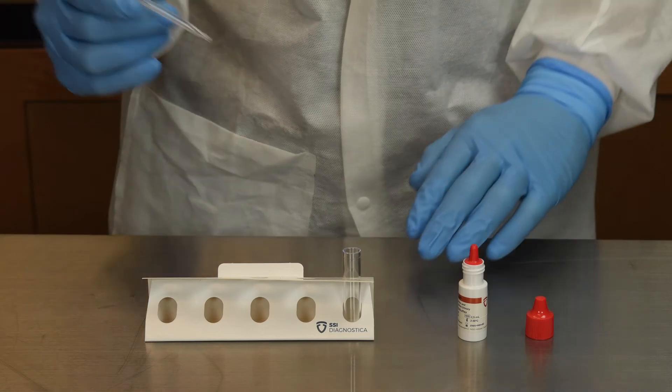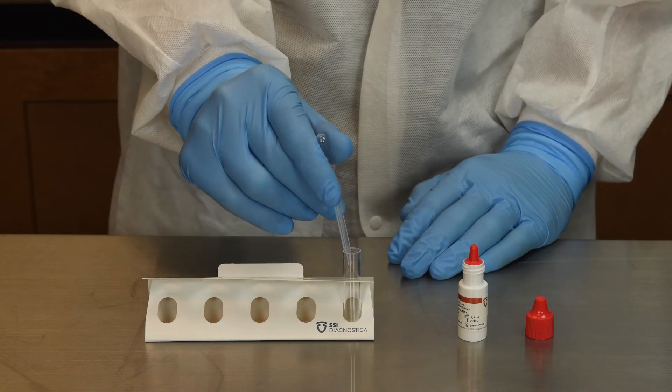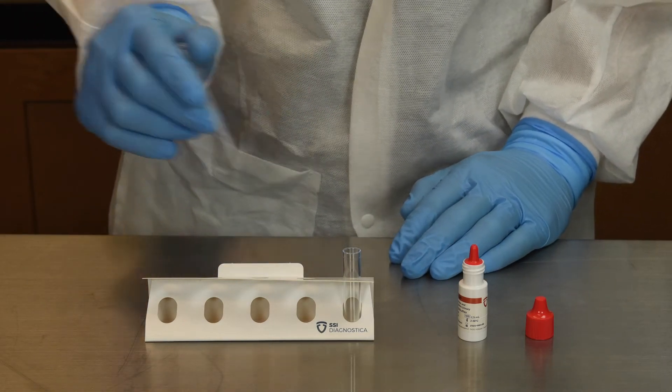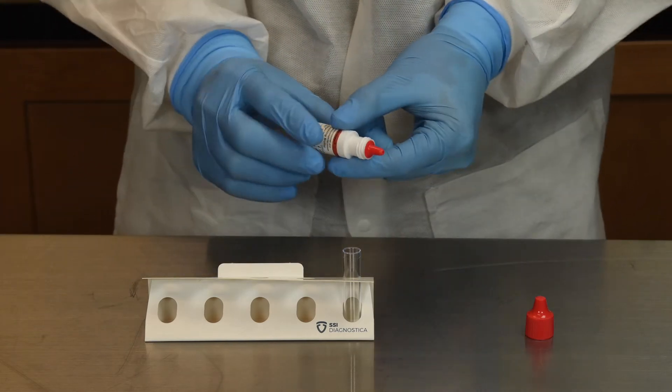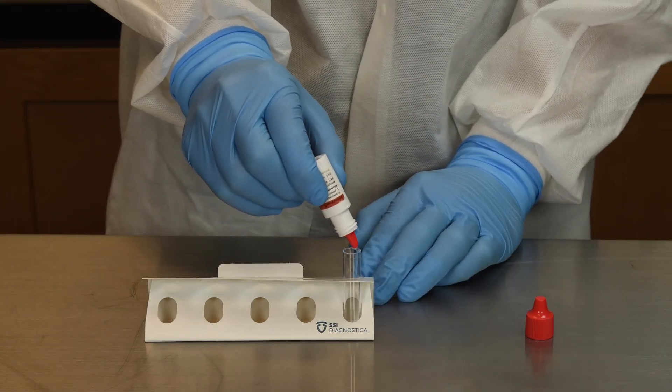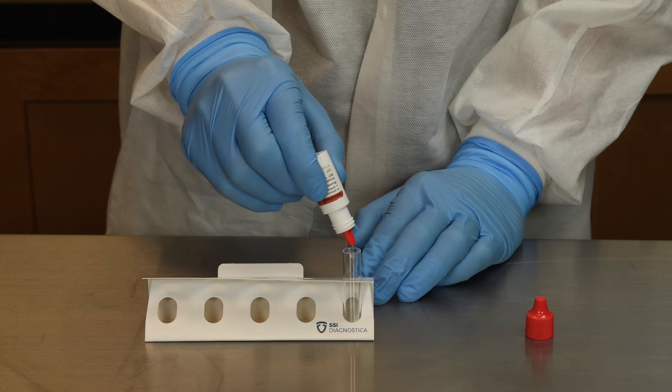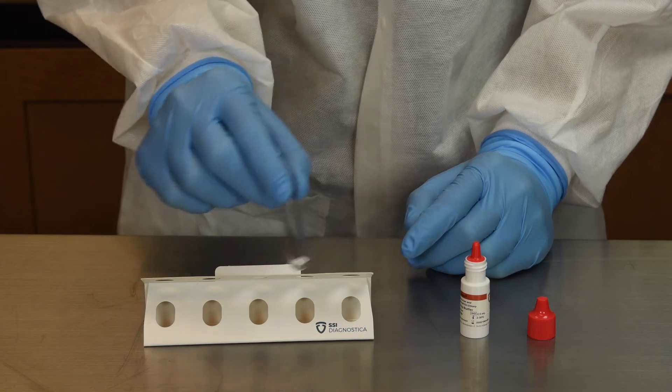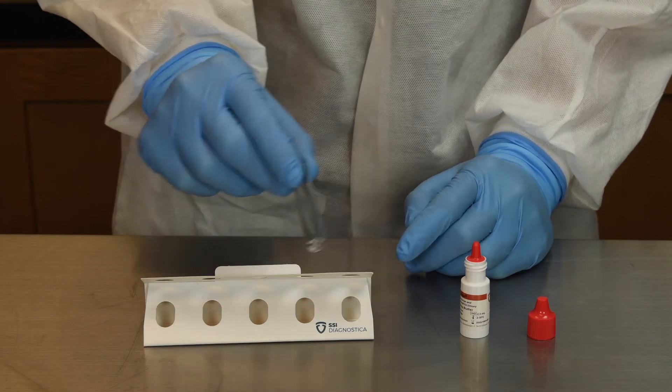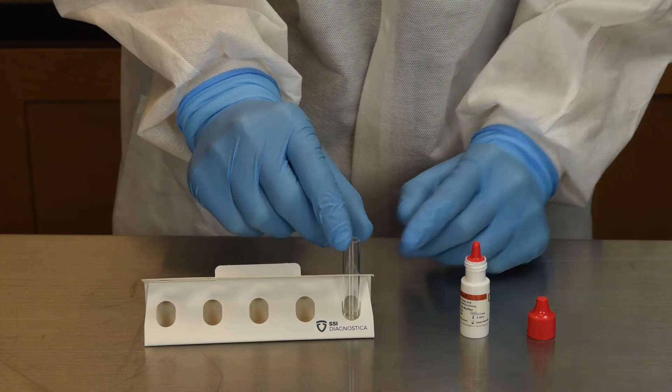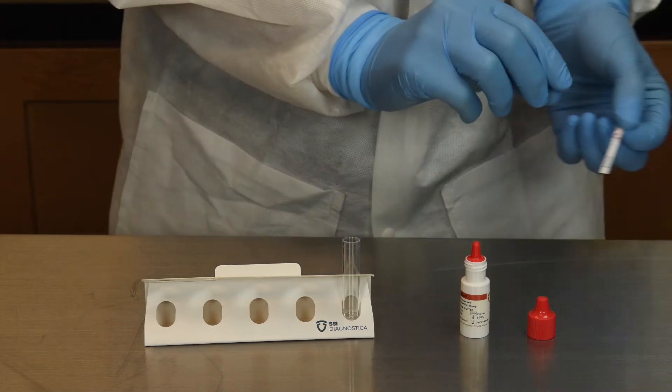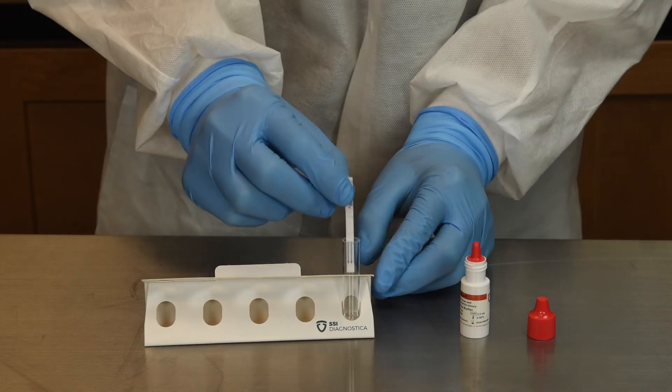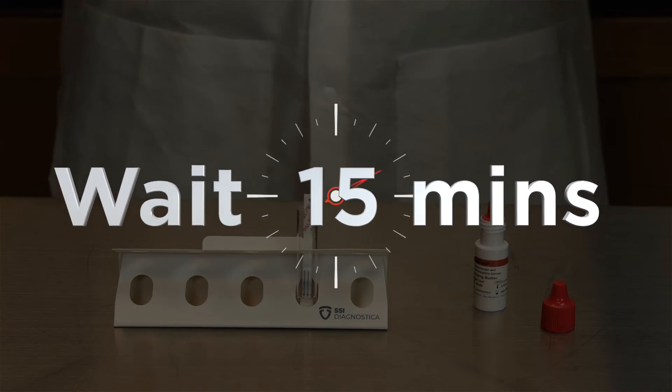Once your QC is complete, you can follow three simple steps for results. First, add three drops of your sample material, either urine or CSF, into your tube. Next, add two drops of the running buffer. Whirl the test tube gently to mix the buffer in with the sample. The third step is to add the ImmuView test strip into the tube. Then wait 15 minutes.